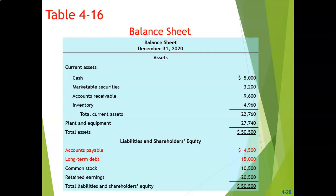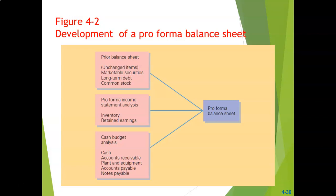If we start with the previous balance sheet, here is what it looks like showing December 31st 2020 balances. We will develop the pro forma balance sheet by using that prior balance sheet. Some items will remain unchanged — like marketable securities, long-term debt, and common stock — as there was nothing to indicate those changed, so the assumption is that they will be unchanged.